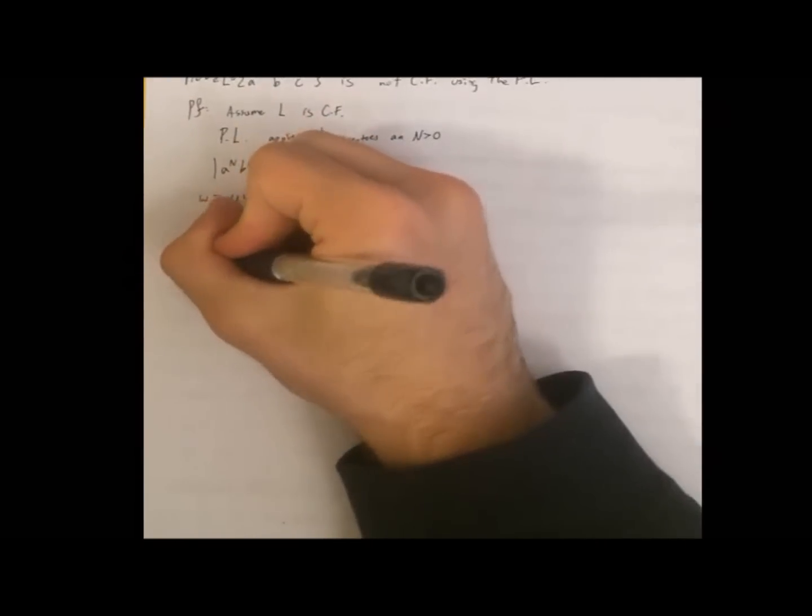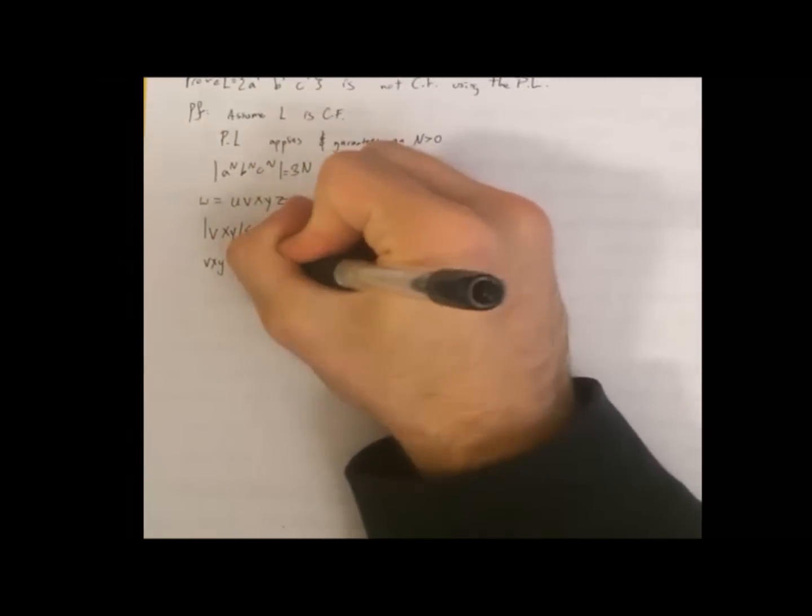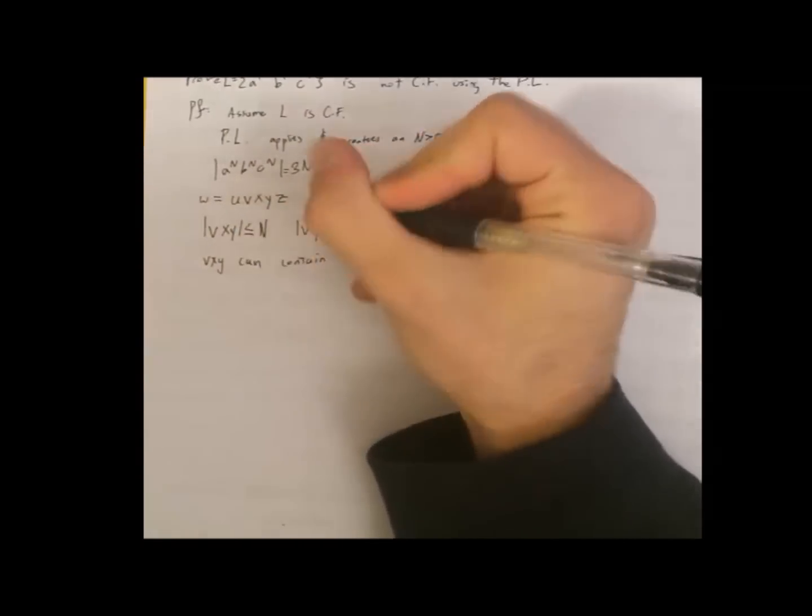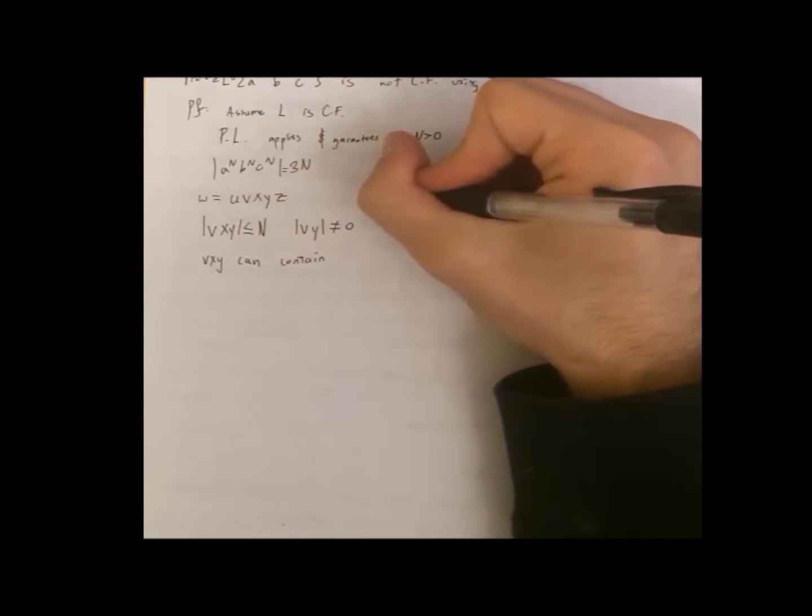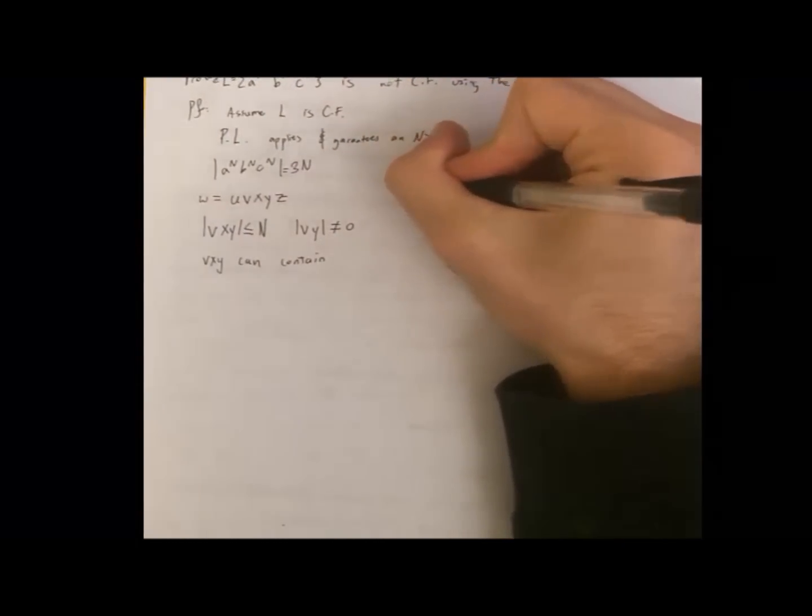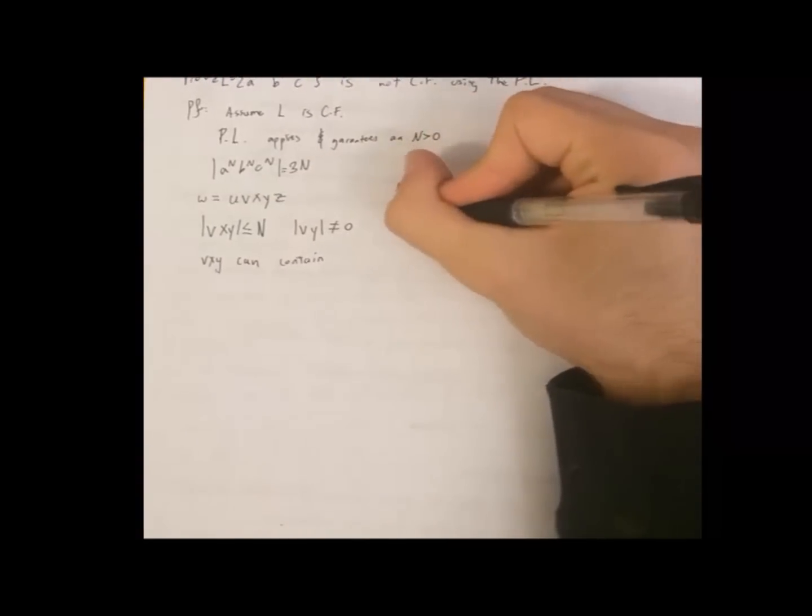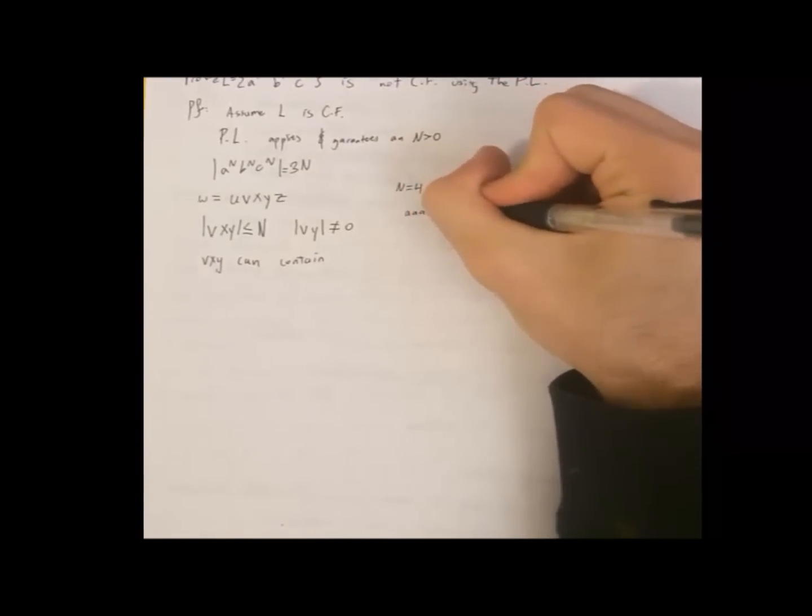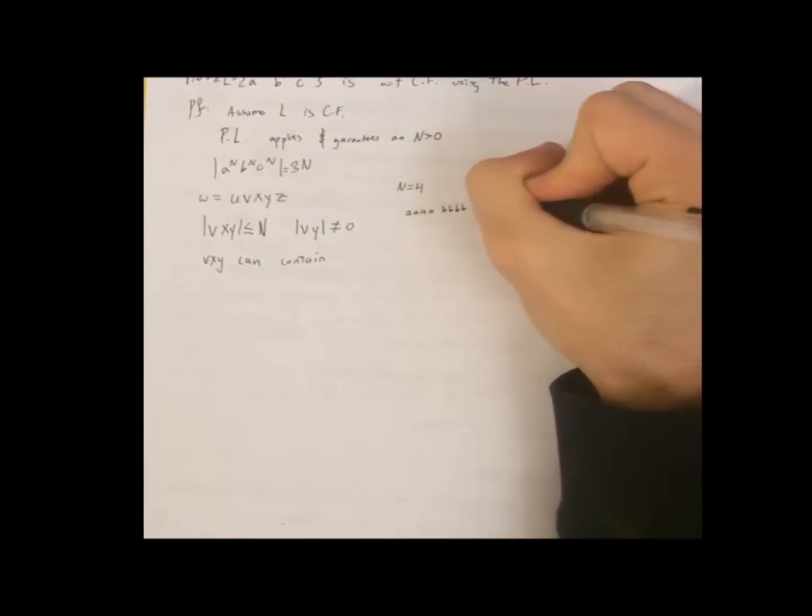So if you look at this, what can you generate? Well, vxy can contain what? For example, let me write a string. So let's say n equals 4. a, a, a, a, b, c, c, c, c. That would mean this is our string.